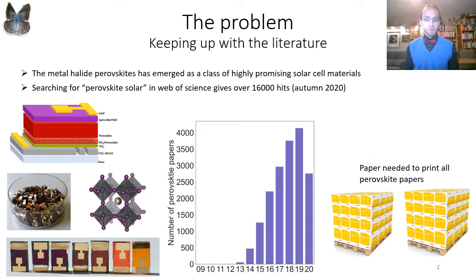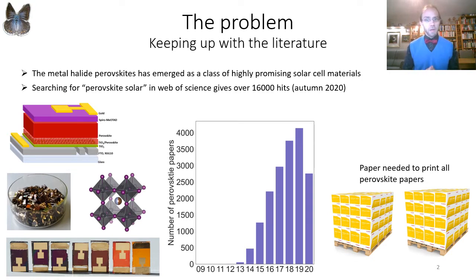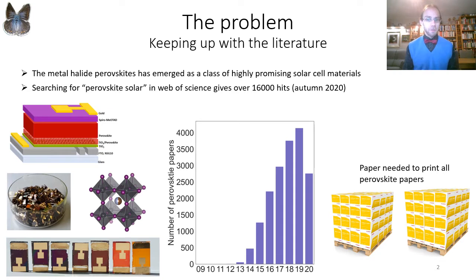For those of you who are not in the field, what you need to know is that metal halide perovskites over the last decade have emerged as the brightest shining star among emerging PV materials. The great potential for perovskites has not only created a hype, but also a large body of literature. If you search for perovskite solar on Web of Science, you get more than 16,000 hits — and most of them are perovskite papers.